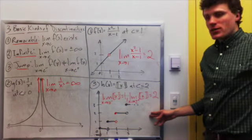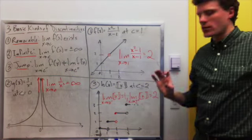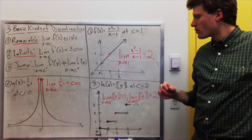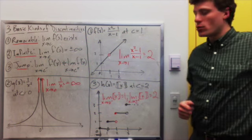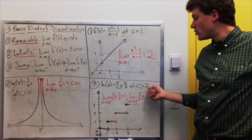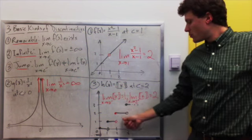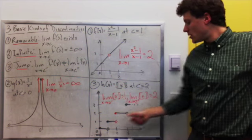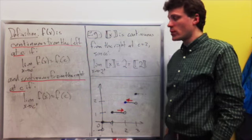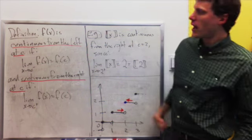Finally, a jump discontinuity is where a function sort of jumps up from one value to the next, and there's a break in the graph. For example, when I take the greatest integer function at x equal to 2: if I approach from the left, the limit is equal to 1; if I approach from the right, the limit is equal to 2.